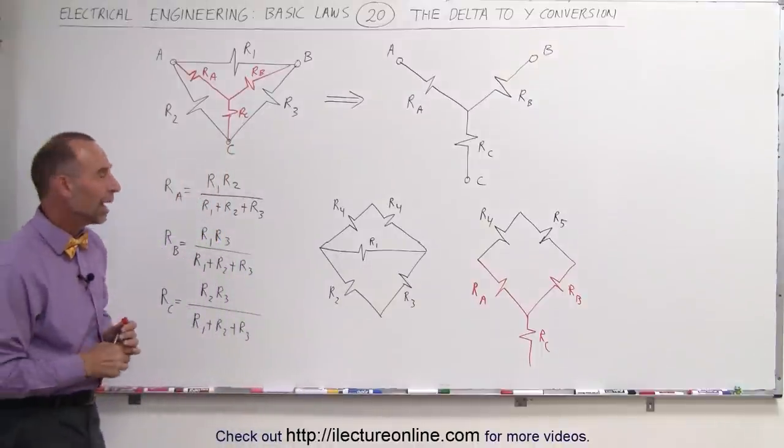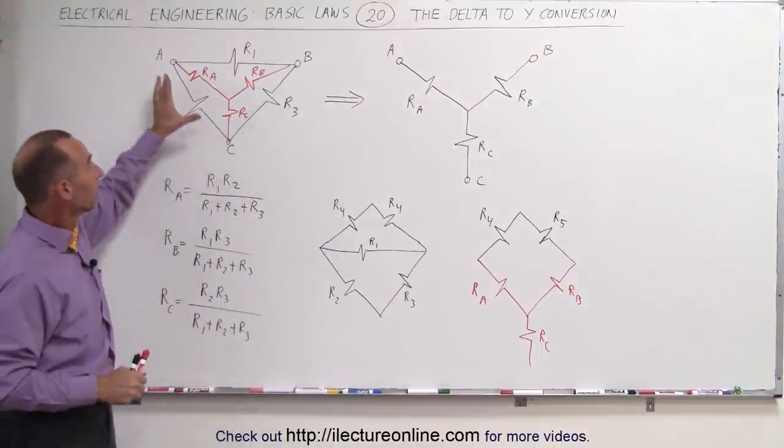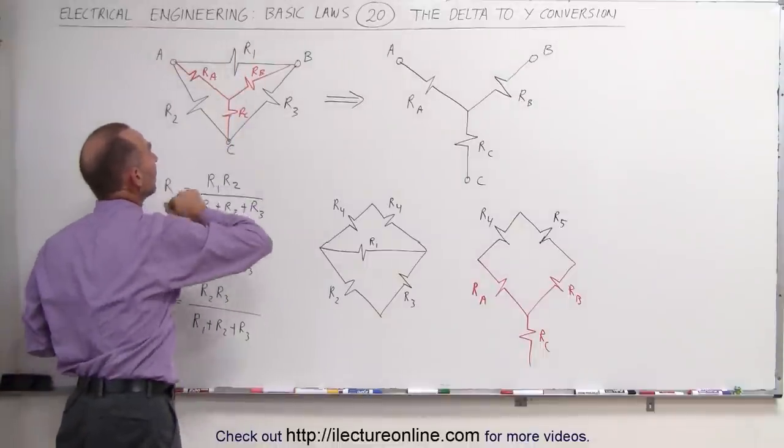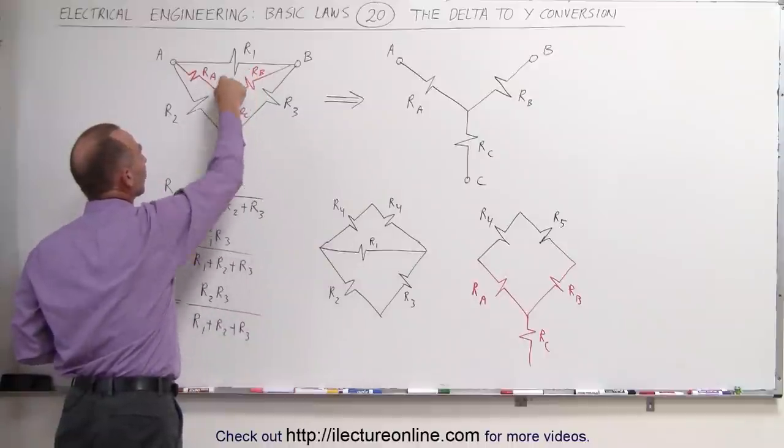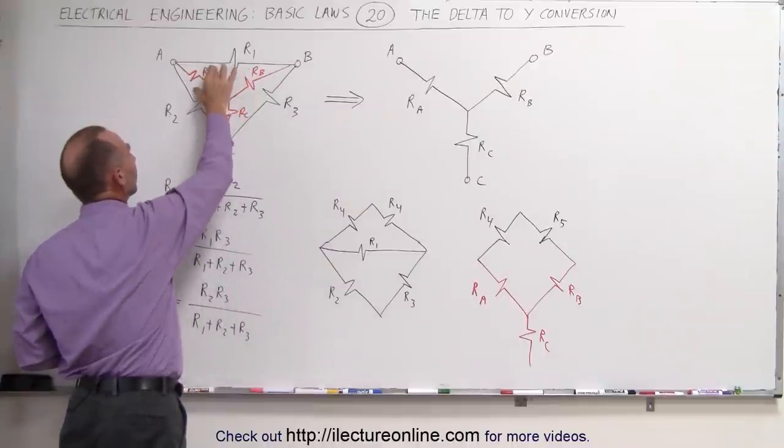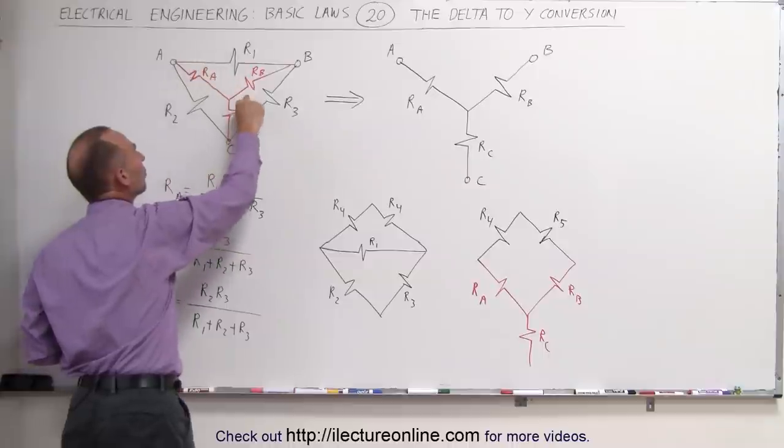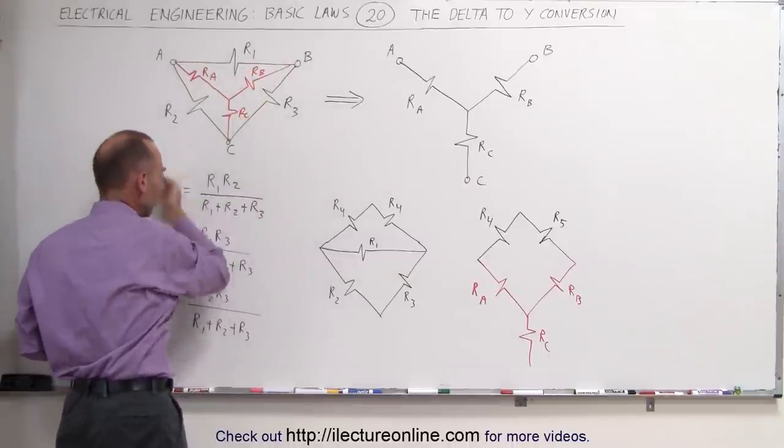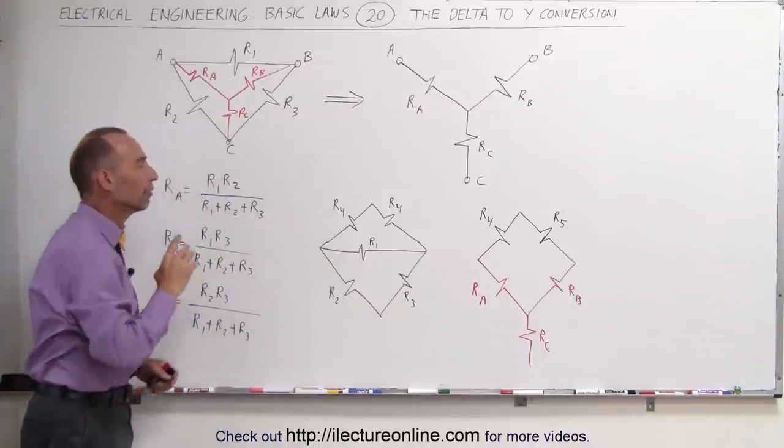And that's what this is all about. So again, find your delta, draw within it the Y, label the Y resistors, and then notice that this resistor is between those two, this resistor is between those two, and this resistor is between those two, and that's how we derive the three equations to convert from one to the other.